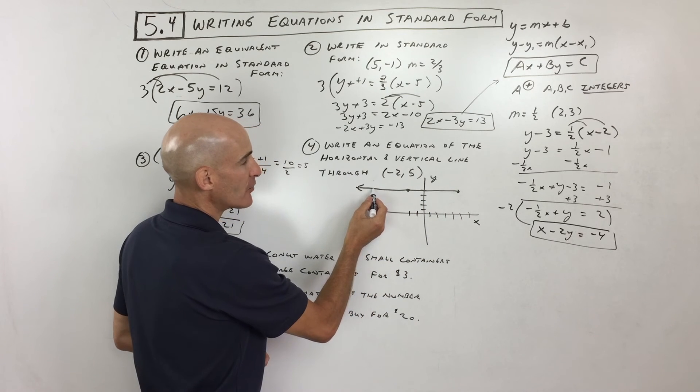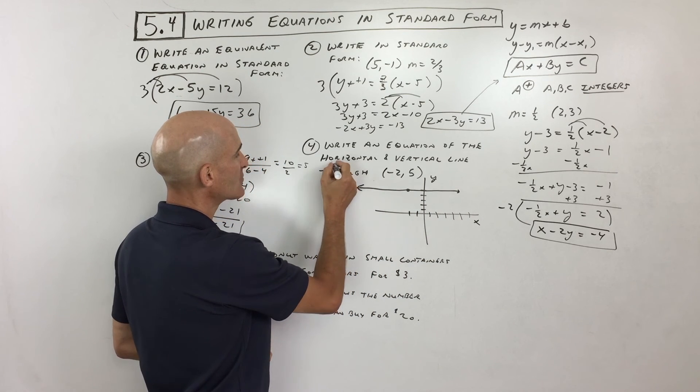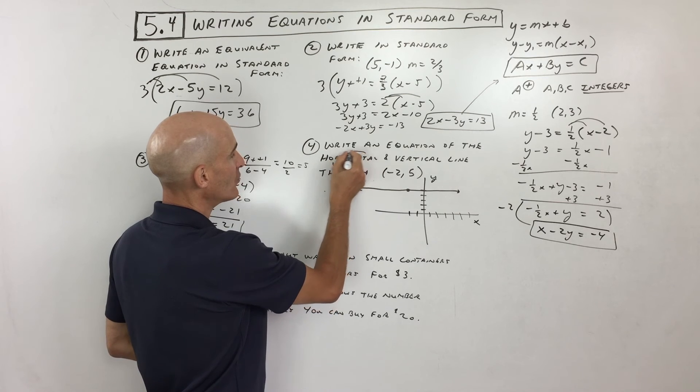If x is negative 10, what's y equal to? 5. So the horizontal line, I'll just put it right here, is y equals 5.